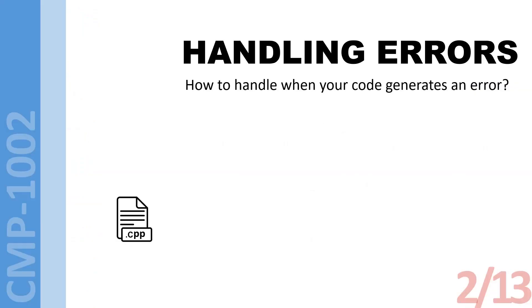The main idea about exception handling is basically handling errors — how to handle when your code generates an error. But an error in this context means runtime errors, not compile-time errors. Because if there is a compile-time error, the code doesn't need to handle it — it's not going to be compiled and there's not going to be an executable file generated.